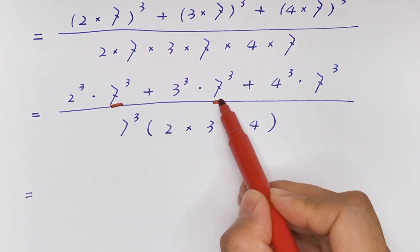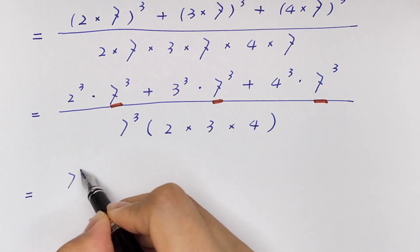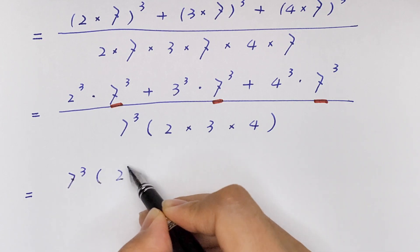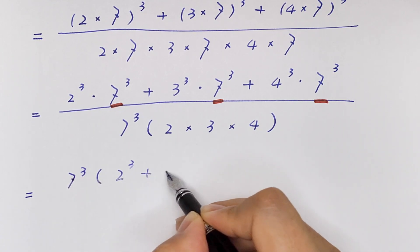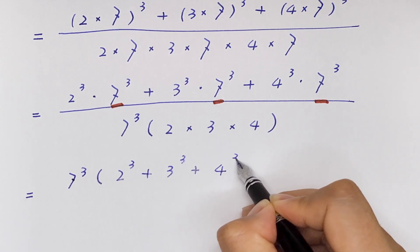It will be equal to 7³ is common, so we take this out of the bracket: 7³(2³ + 3³ + 4³).